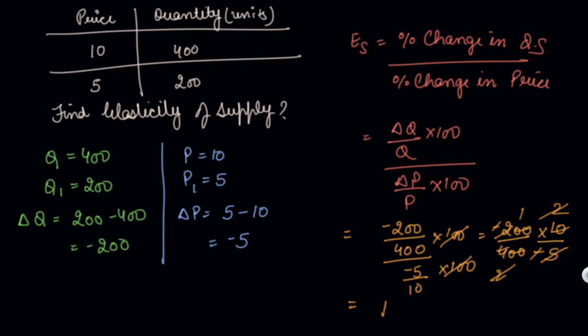So in this way you can calculate. Your elasticity of supply is equal to 1 according to your percentage method. This is how you calculate your price elasticity of supply using your percentage or proportionate method. I hope you like the video. Please download our Scholars Learning App and enjoy the learning experience with us.